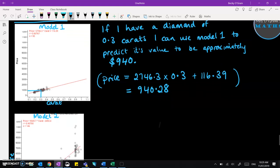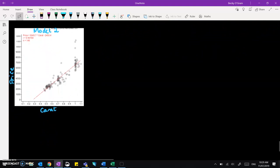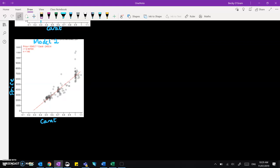Now we'll do the same for model two. For this one, we need to pick a diamond size that fits this range, somewhere between 0.45 up to 1.1. I'll pick somewhere approximately in the middle of that, let's say 0.7 carats.